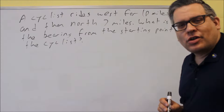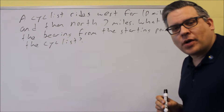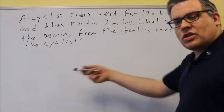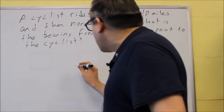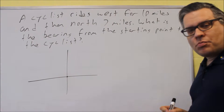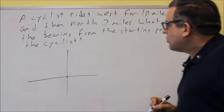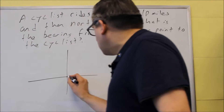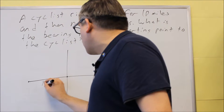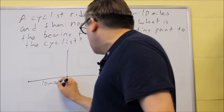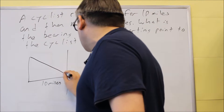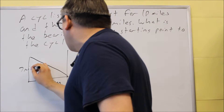We have to make sure we draw this with the correct direction so that when we get our answer for bearing, we'll have the correct direction. North is always up and west is going to be to the left. So let's draw the starting point here and make that the origin. From this starting point, we're going to ride west for 10 miles — going to the left — and then up 7 miles north.